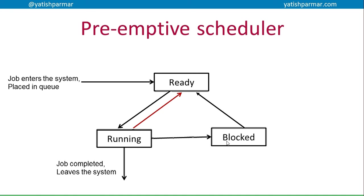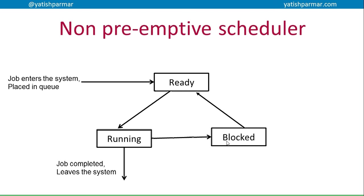There are three different ways for a job to exit the running state: it can be blocked if peripherals are not available, it can be completed and leave the system, or it can go back into the ready state if it's monopolizing the CPU. In a non-preemptive scheduler that third option doesn't apply - a job enters the running state and keeps running until it finishes, unless data or peripherals are unavailable causing it to be blocked, or the job completes and leaves the system. The operating system cannot intervene to prevent a task monopolizing the CPU.